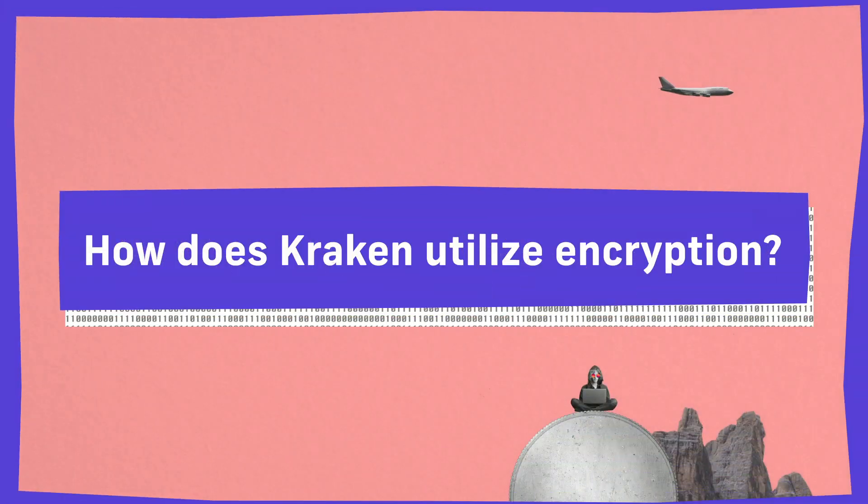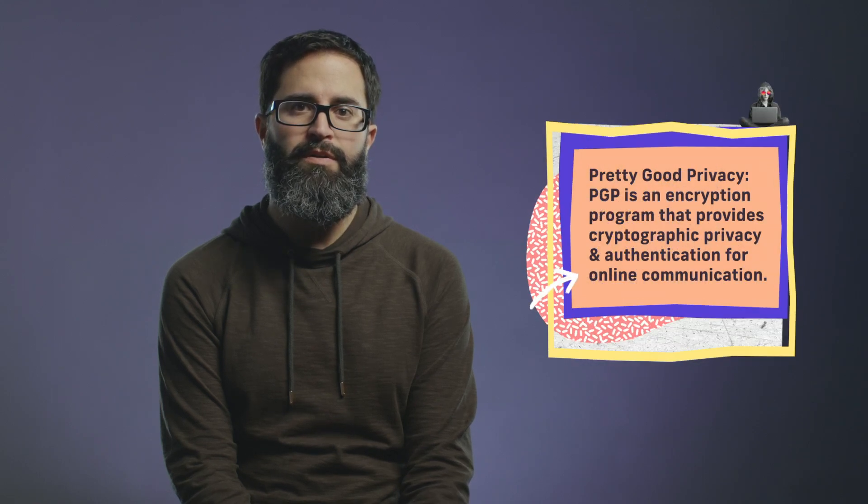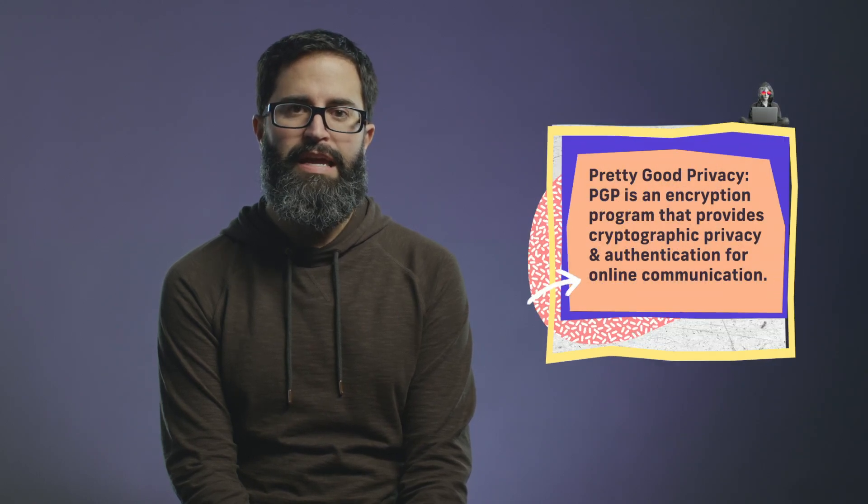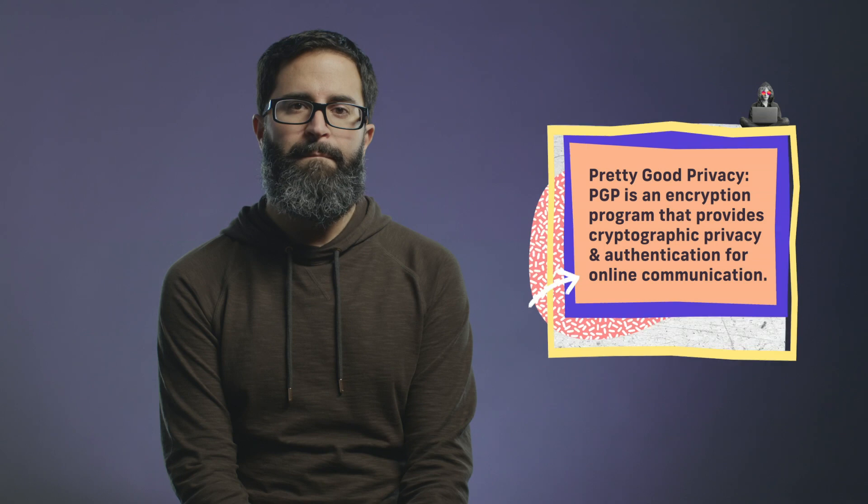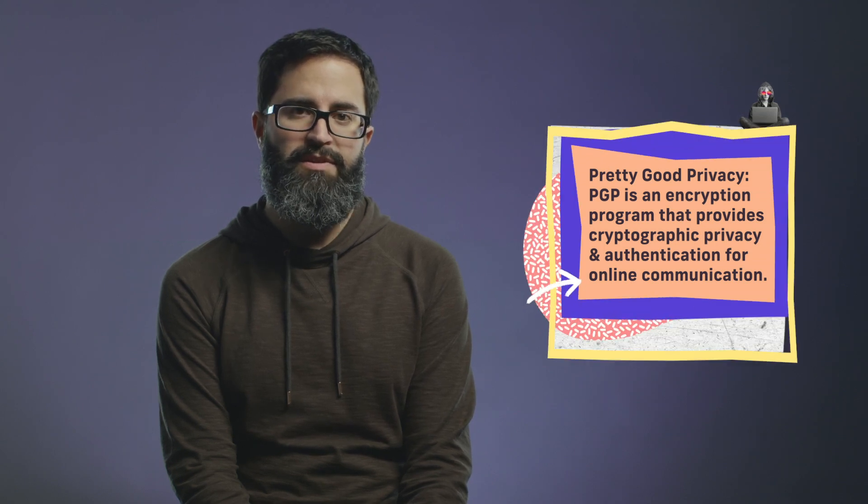An example of end-to-end encryption would be the use of PGP in our own exchange. We allow clients to log into their exchange accounts at Kraken and upload their PGP public keys. When that happens, all communication from Kraken to their email account is actually encrypted with their public key.